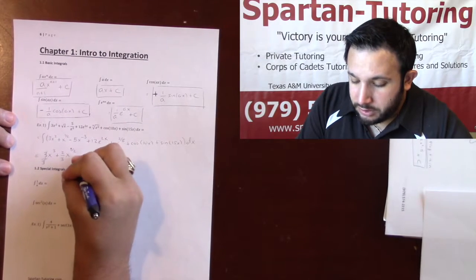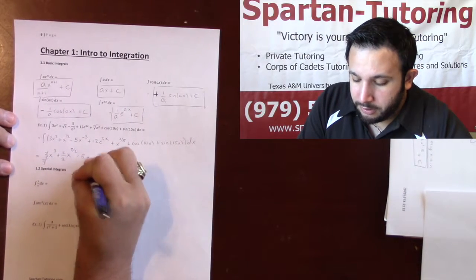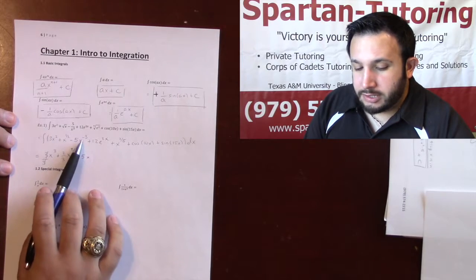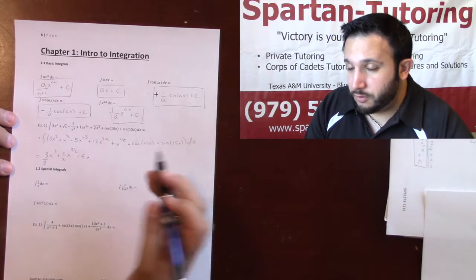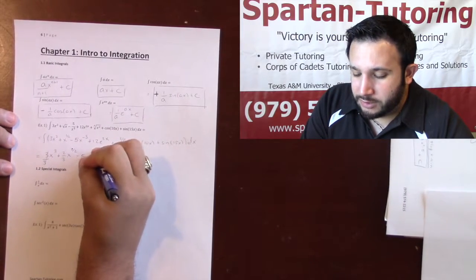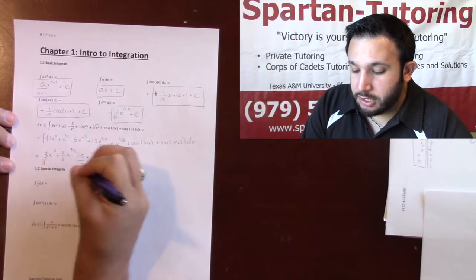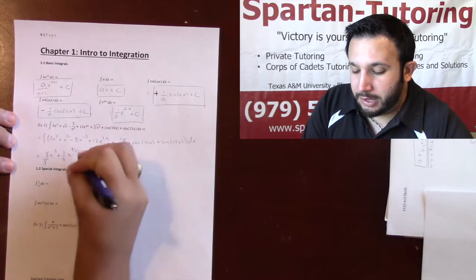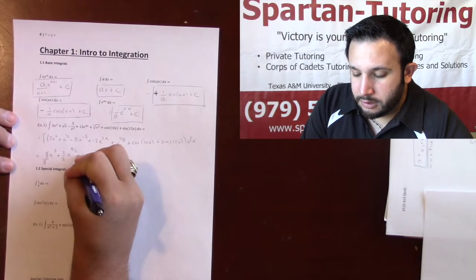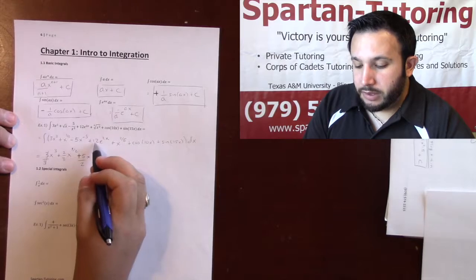This is negative 5x to the negative 3. So you rewrite your constant and variable. You add 1 to the top, negative 3 plus 1. Be careful, this is a negative 2. I take that negative 2, flip it, put it in front. And so because I have a negative 5 divided by a negative 2, it's going to turn into a plus.